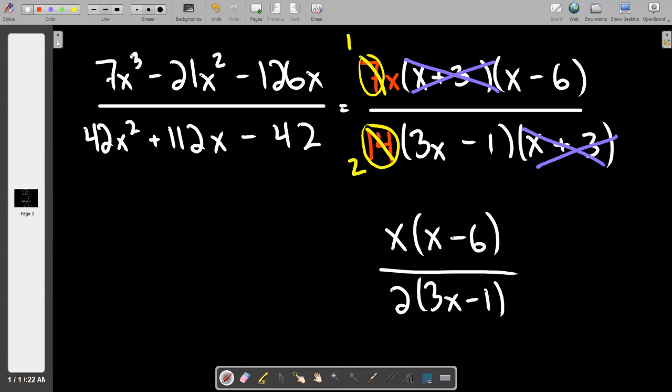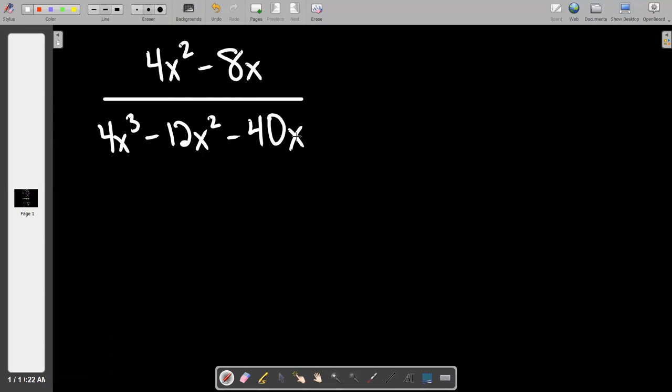Last one. Promise. This will be our sixth example of the day. We have (4x² - 8x)/(4x³ - 12x² - 40x). What do we do first? Good job. I like how quickly you guys are just instinctively going to the GCF. It warms my heart. The top can be pulled by 4x, dropping it to (x - 2). And then the bottom, I see another GCF.